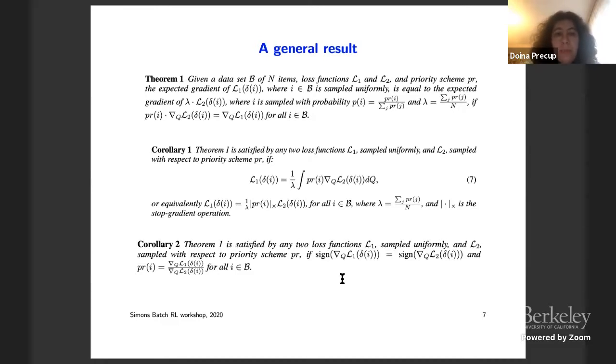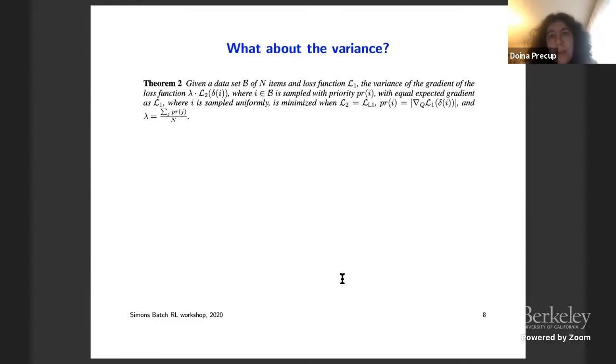And so in particular, we can use as a priority the magnitude of the prediction error delta and we obtain a relationship that is actually very weak between the two functions. In particular, if the sign of the gradient of the first loss using delta i is equal to the sign of the gradient of the second loss on delta i, and the priority is given by the ratios of these two gradients, then the theorem is always satisfied. And so while the special case that we analyze in the paper has to do with TD errors, in fact, one can use this for really any kind of losses, including, for example, eligibility traces, versions of Q-learning, SARSA, and so on.